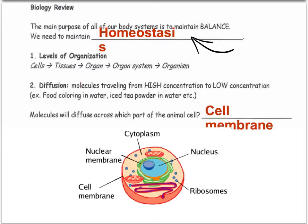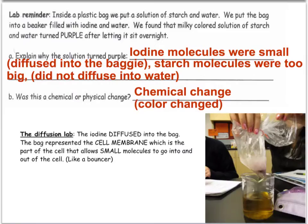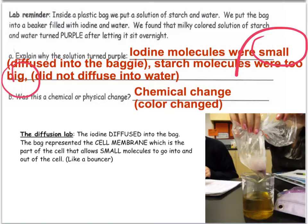Molecules will diffuse across the cell membrane in an animal cell. If it said plant cell, it would also have to go through the cell wall — plant cells have both the cell membrane and the cell wall. For the experiment explaining why the solution turned purple: the iodine molecules were small so they did diffuse into the bag, but the starch molecules were too big to diffuse into the bag.